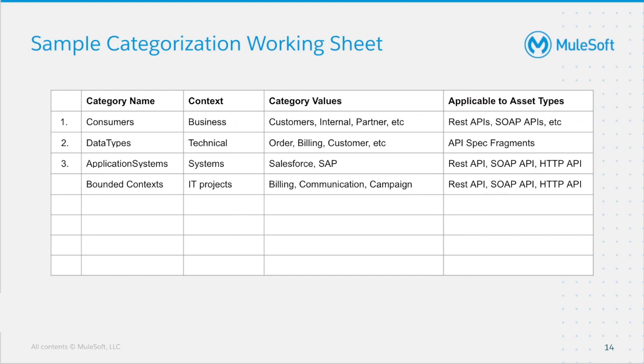Here's my categorization worksheet with all the examples that I have discussed. After adding these to Anypoint Exchange — which you can find out how to do in the Enhanced API Discoverability with Exchange video — you can now see how easy it is to be able to categorize APIs. And I'll do a quick demo to show you how easy it is to find and search for the APIs that have been categorized.